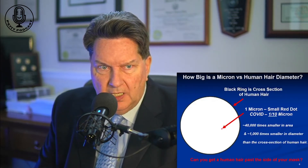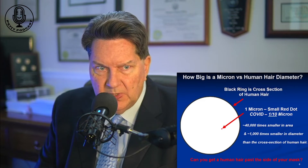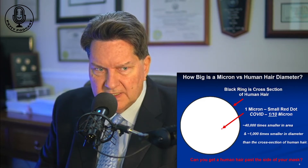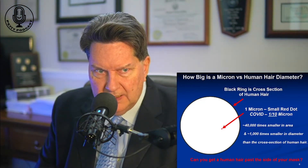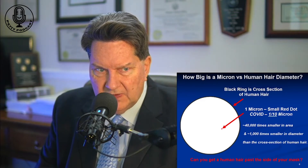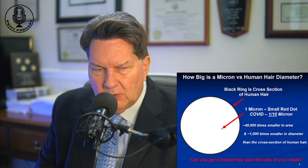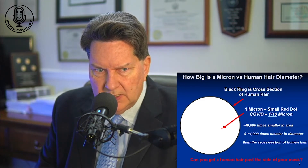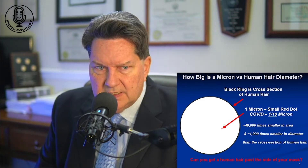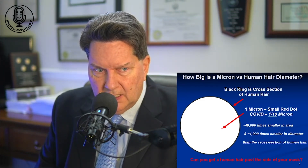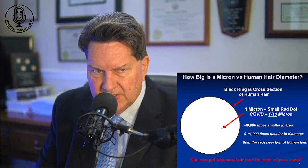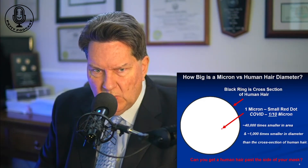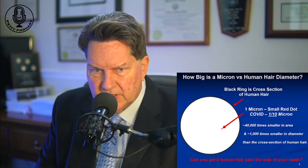Just to give a perspective on the cross-section of a human hair versus a micron — and remember that COVID is a tenth of this micron size. The white circle with the black ring represents the cross-section of a human hair, and the little red dot represents a micron. COVID is one-tenth of that little red dot. In terms of area, the COVID particle is 40,000 times smaller in area than a cross-section of a human hair, and about 1,000 times smaller in diameter.